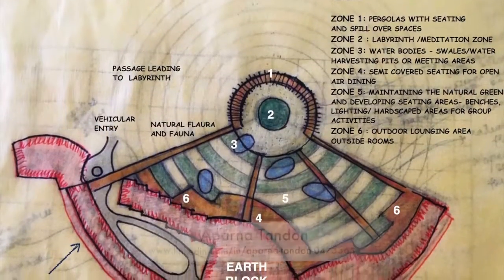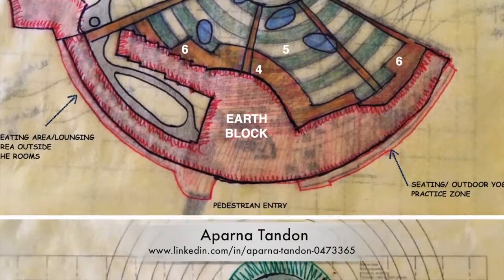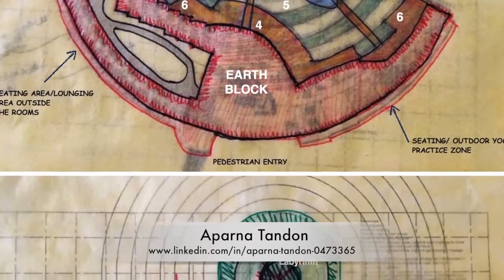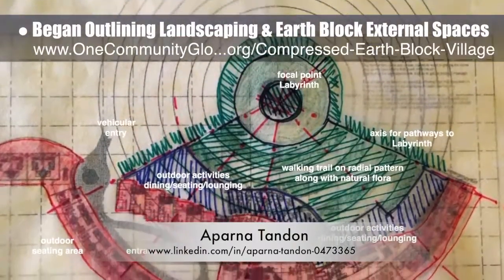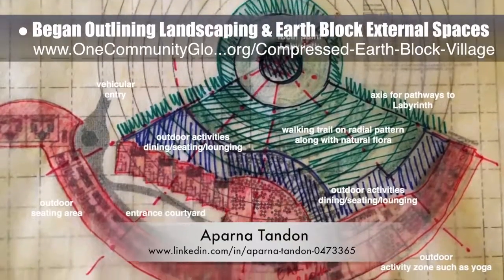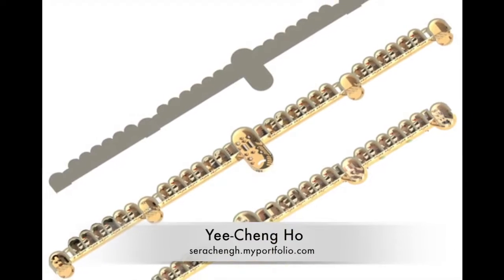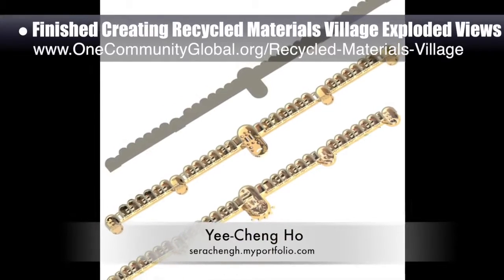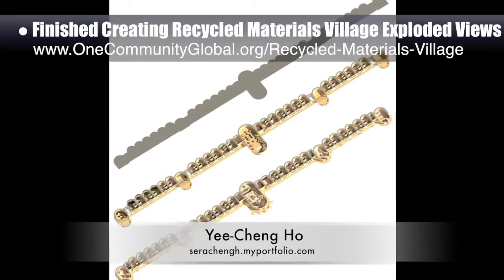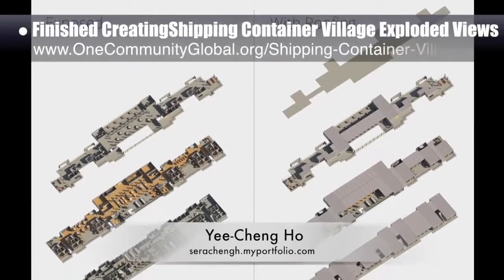Aparna Tandon, architect, joined the team working on the compressed EarthBlock Village. Her first week of work began outlining the landscaping and EarthBlock external spaces and possibilities. Yi Cheng Ho, interior designer, finished creating new exploded views for the Recycled Materials Village Pod 6 and the Shipping Container Village Pod 5.